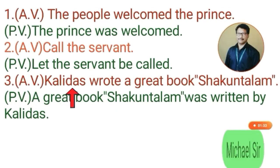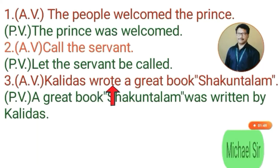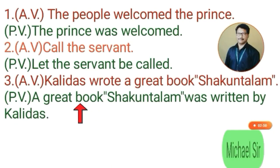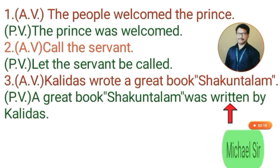Third example. Active voice: 'Kalidas wrote a great book, Sakuntalaam.' Here 'Kalidas' is the subject, 'wrote' is the past verb, and 'a great book Sakuntalaam' is the object. In passive voice, the object becomes the subject. Because it is past tense, the helping verb is also in past: 'was,' then the third form 'written,' then 'by Kalidas.' Passive voice: 'A great book Sakuntalaam was written by Kalidas.'